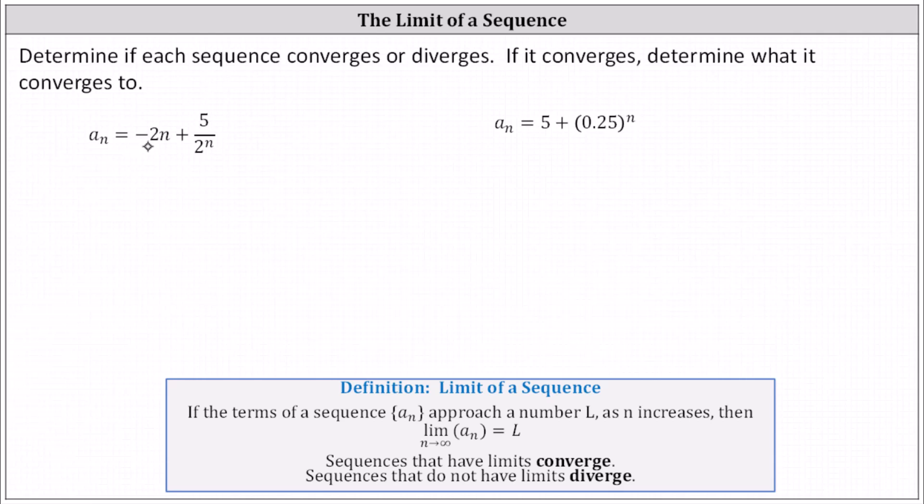First we have a_n equals negative 2n plus 5 divided by 2 to the power of n. We need to consider the limit as n approaches infinity of a_n. Notice as n approaches infinity, negative 2 times n approaches negative infinity. And considering 5 divided by 2 to the power of n, as n approaches infinity, the denominator increases.